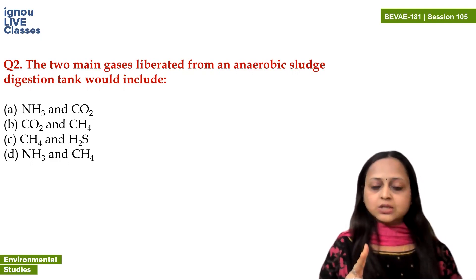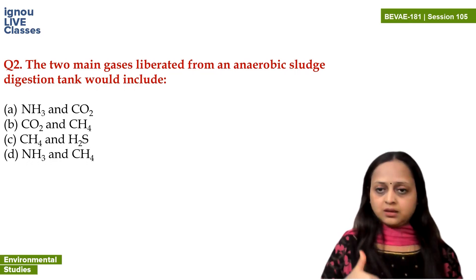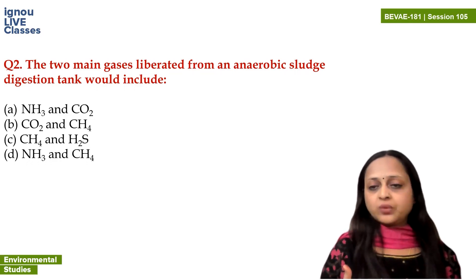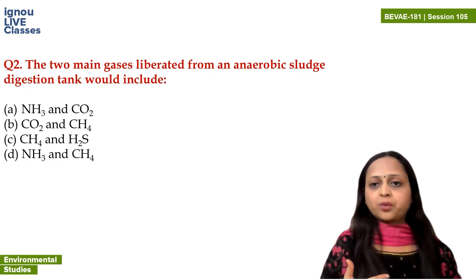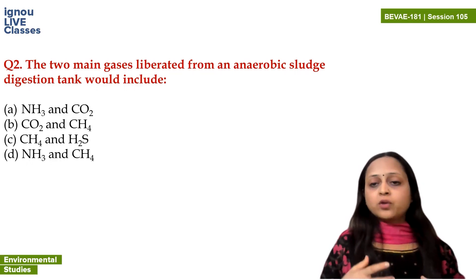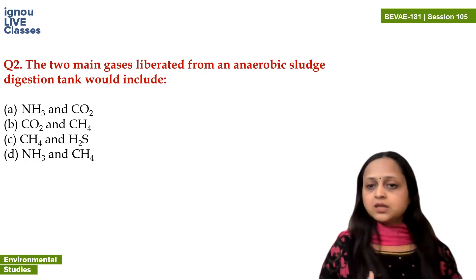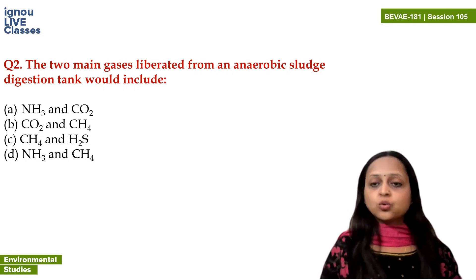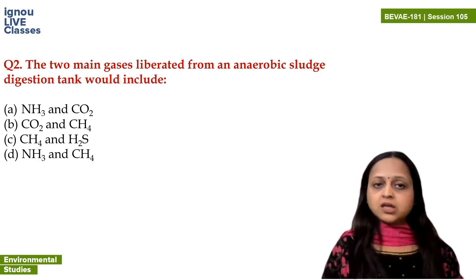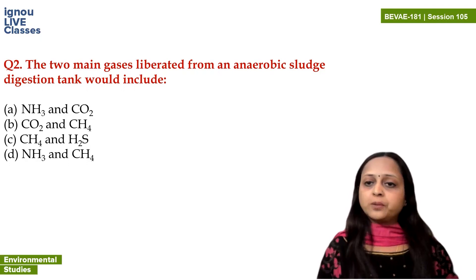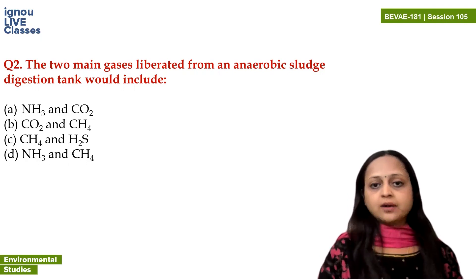The main two gases released are methane and CO2. In anaerobic processes, methane and CO2 are released from 90 to 98 percent. The rest of the gases — like ammonia, hydrogen sulfide — make up 2 to 10 percent. So the answer is B, that is CO2 and methane.